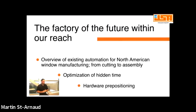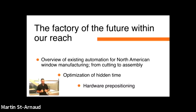I'm going to go through different stages of your factory and tell you what we can do at different stages and for different sizes of companies. Today's overview covers existing automation for North American window manufacturing, from cutting to assembly. This also applies to patio doors, tilt-and-turn, and European-style windows. Our focus today is optimization of heading times and hardware pre-positioning.